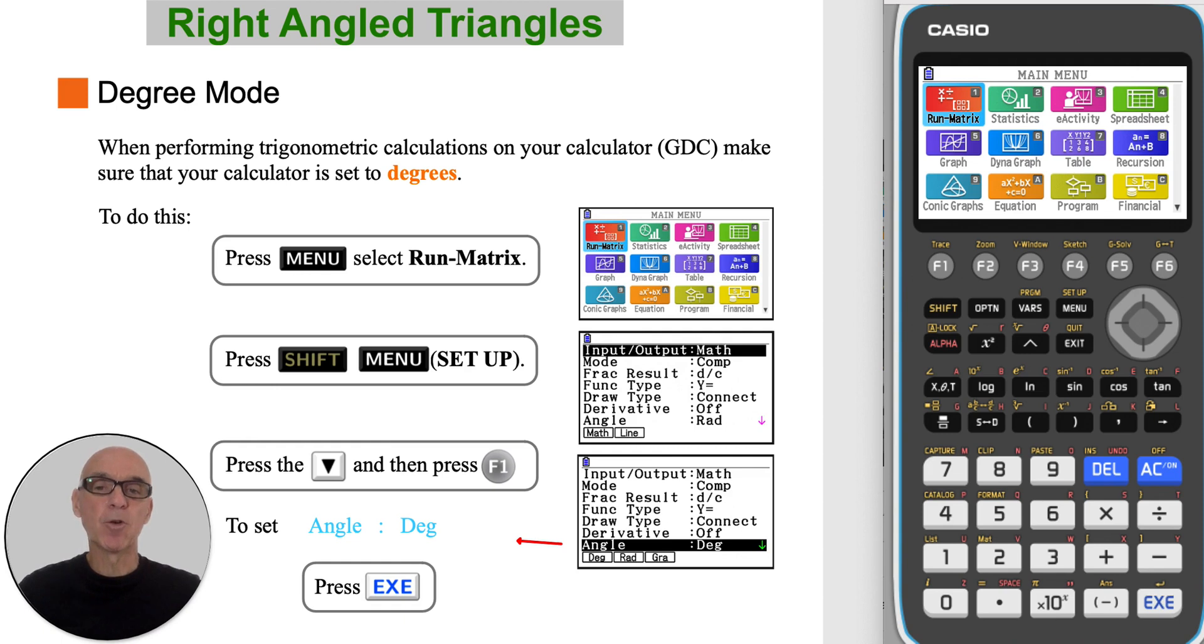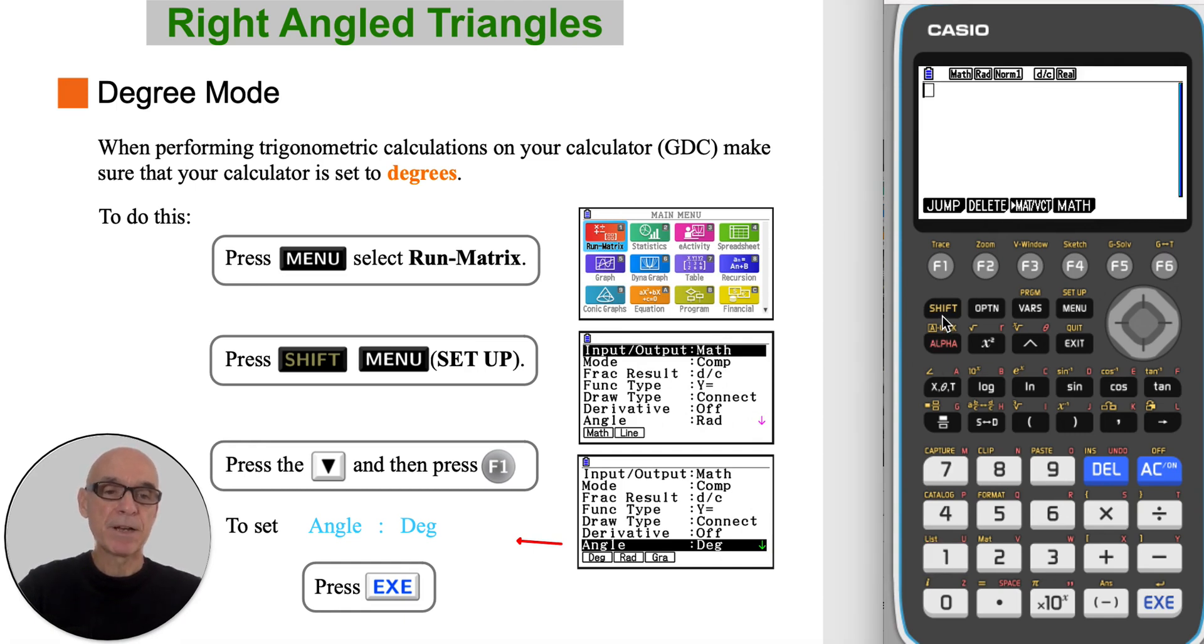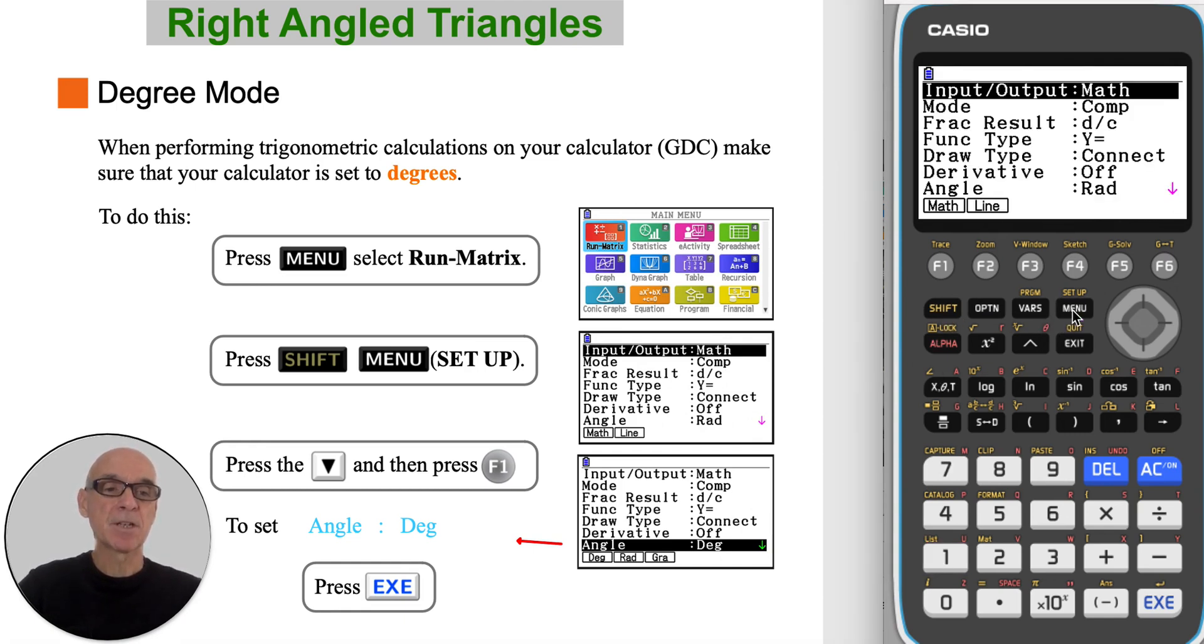When performing trigonometric calculations on your calculator, make sure that your calculator is set to degrees. To do this, from the main menu, select Run Matrix, press Shift Menu to access Setup, and scroll down to the Angle option. Press F1 to select Degrees, and then press Execute.